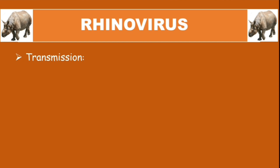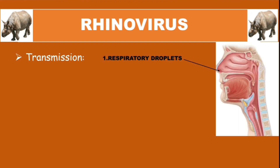Rhinoviruses are transmitted firstly through respiratory droplets, and secondly through fomites. On our skin, the rhinovirus can survive for two hours, and on other surfaces they can survive for four hours.